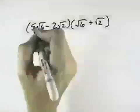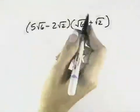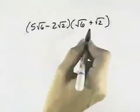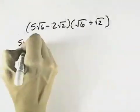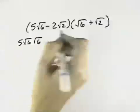I want to perform the indicated operation and simplify. Well, here I have two factors that I can multiply together. So I've got 5 times the square root of 6 times the square root of 6 for the first terms,